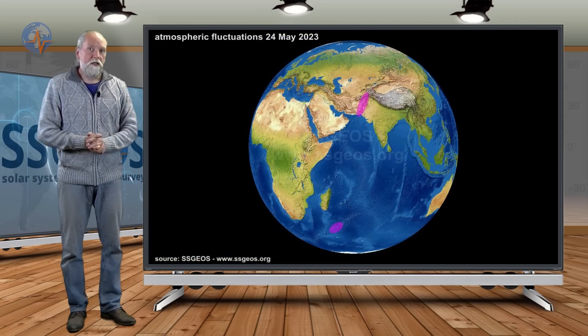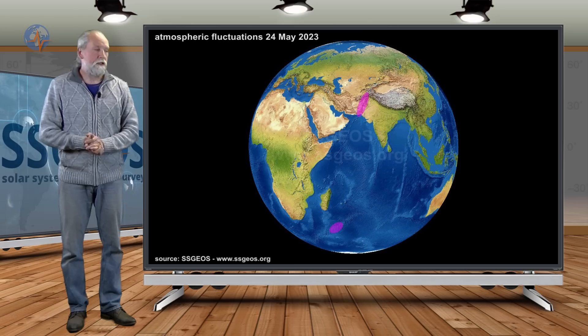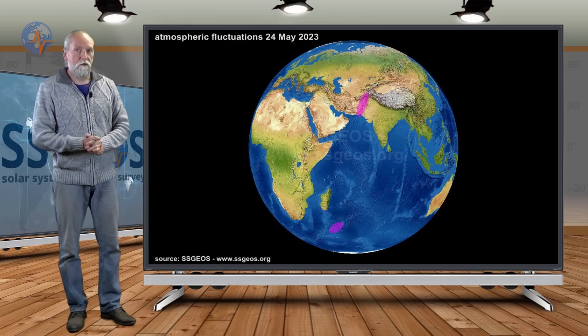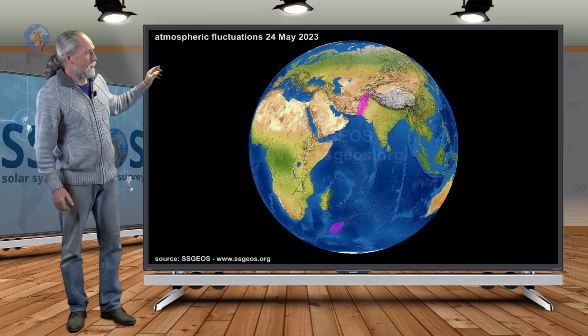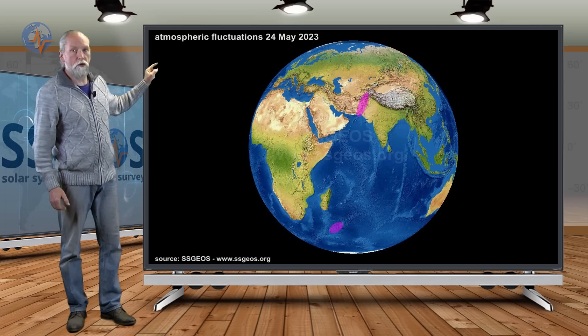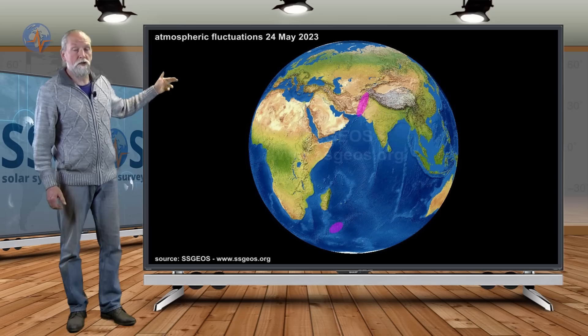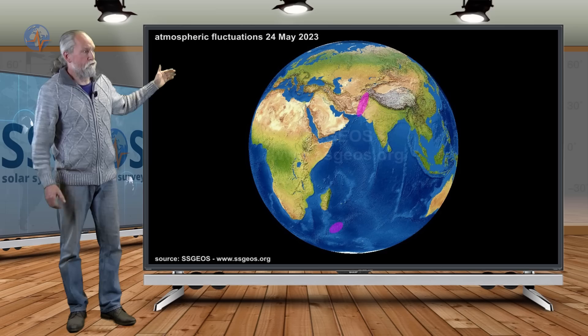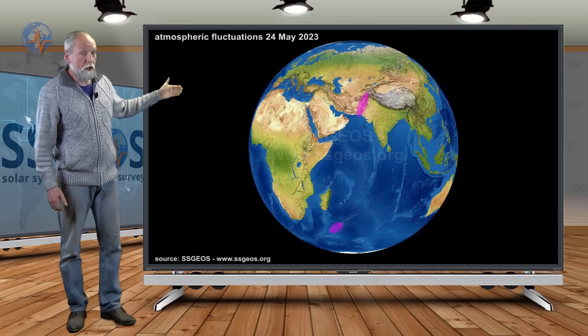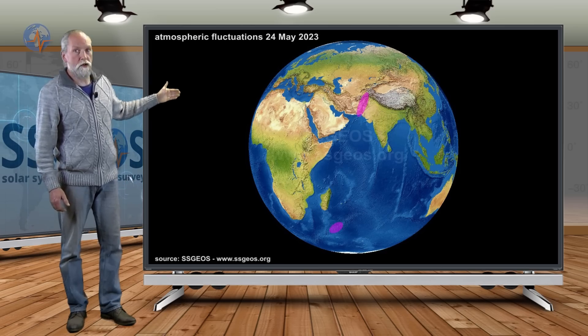If I look at the atmospheric fluctuations that we had in recent days, we have actually three of them. The first one occurred on the 24th of May, and if we count about six days, we would end up today, tomorrow, and in the next few days. That could possibly become significant, and that fluctuation was over Pakistan.